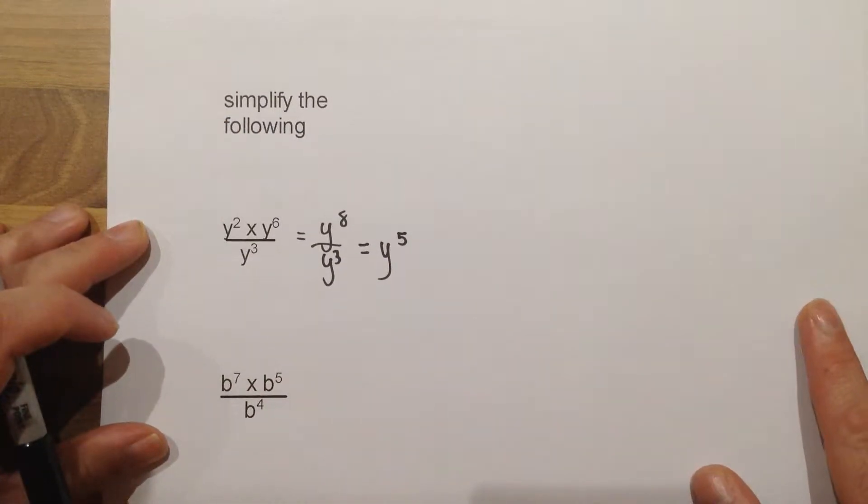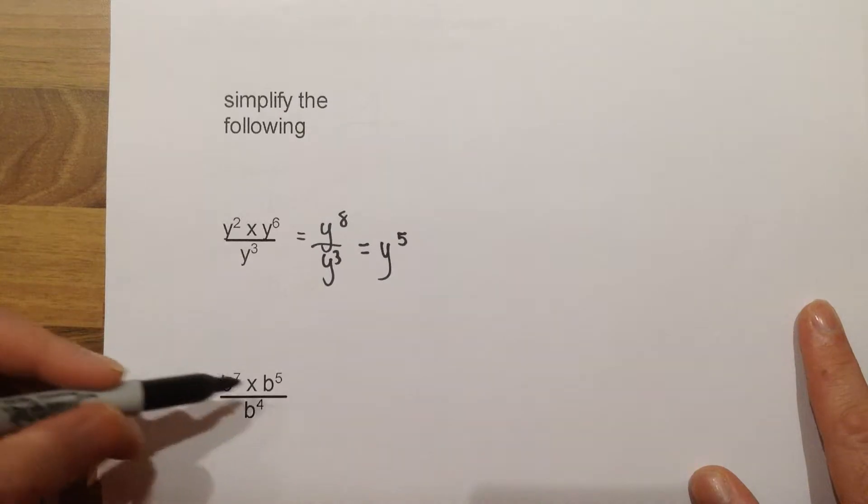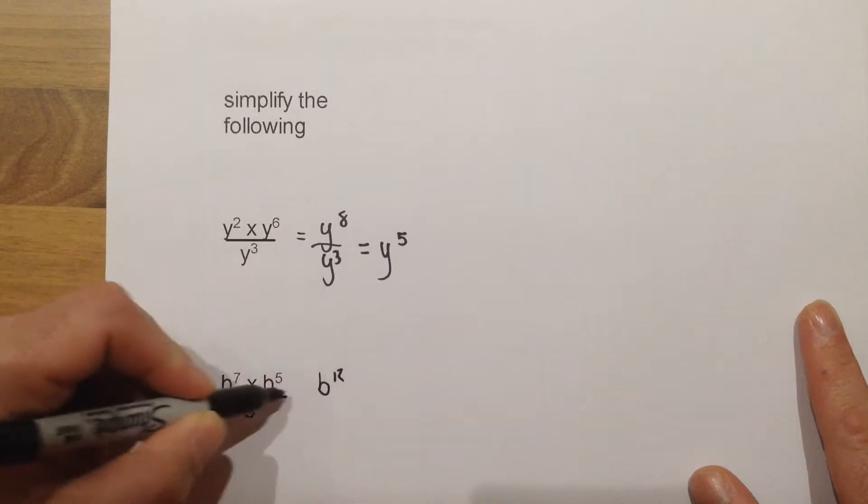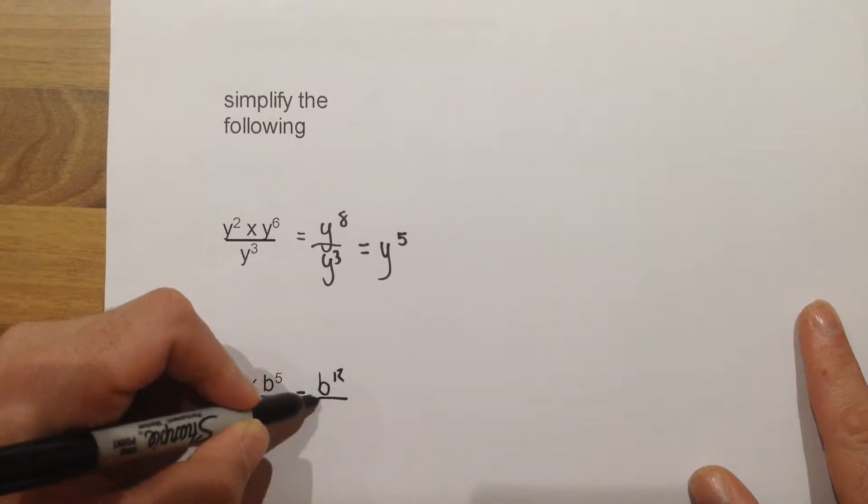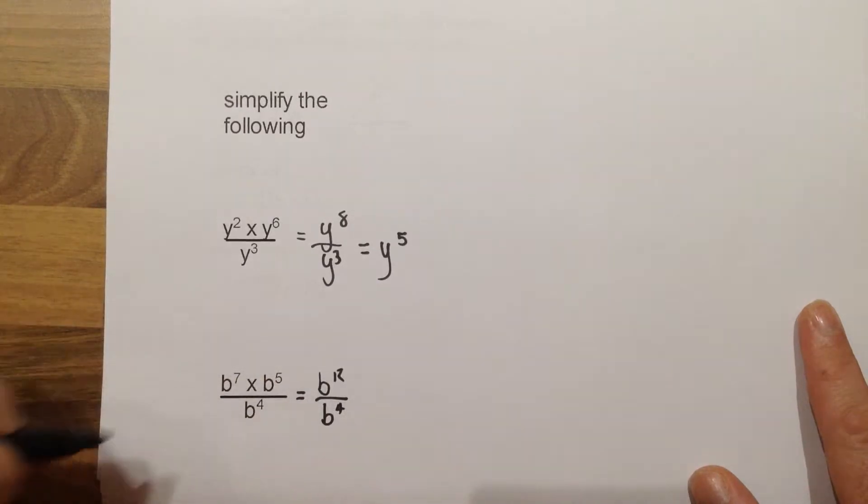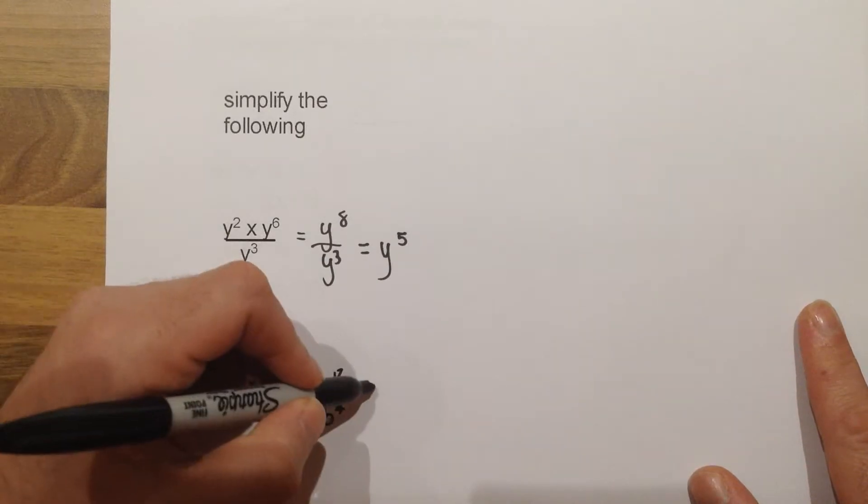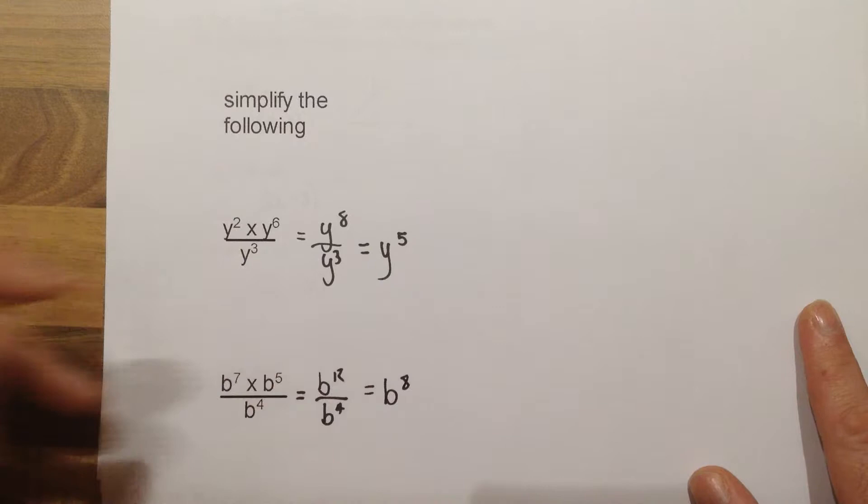For the next question, same idea, b to the power 7 times b to the power 5 would give us b to the power 12 over b to the power 4. And then b to the power 12 divided by b to the power 4 gives us b to the power 8. We just subtract the powers.